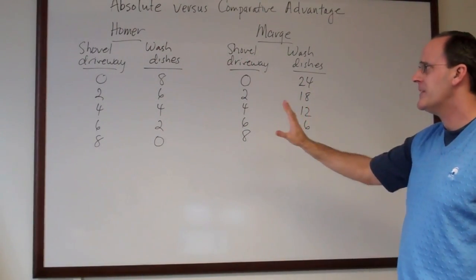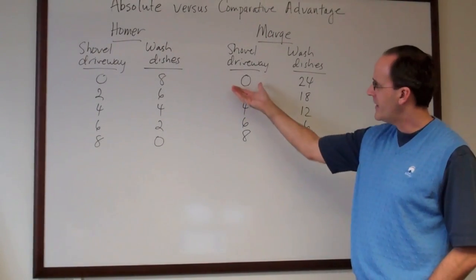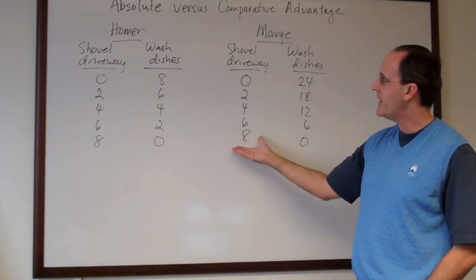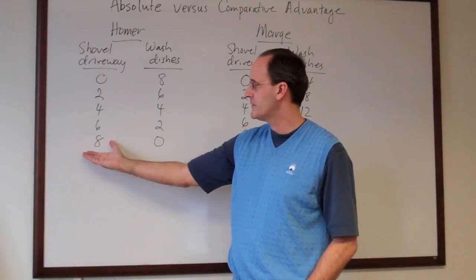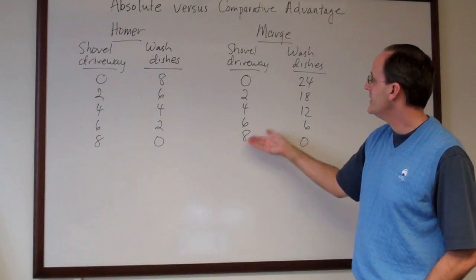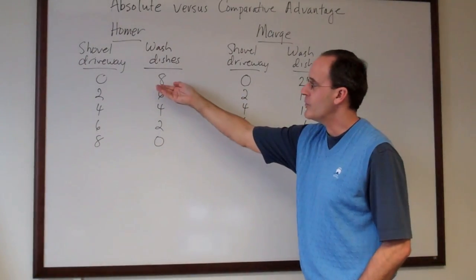Now if you look carefully at the data you'll see that Marge has exactly the same production capacity on shoveling the driveway as Homer does. Their maximum is eight in each case, but Marge is substantially better at washing dishes than Homer is.